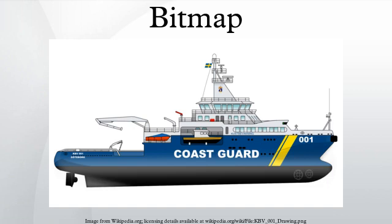In computer graphics, when the domain is a rectangle, a bitmap gives a way to store a binary image, that is, an image in which each pixel is either black or white. The more general term pixmap refers to a map of pixels, where each one may store more than two colors, thus using more than one bit per pixel. Often bitmap is used for this as well.